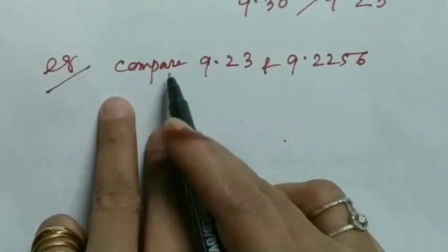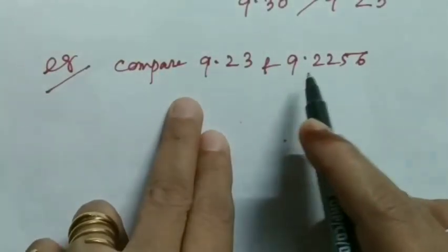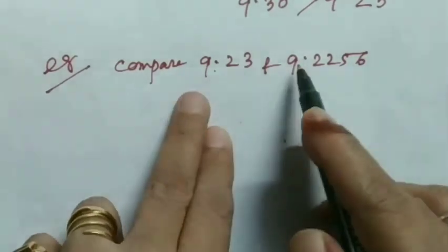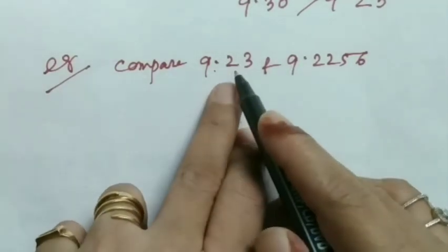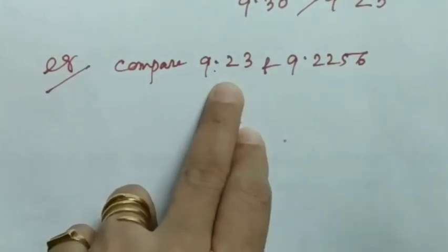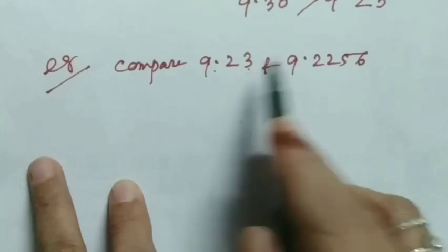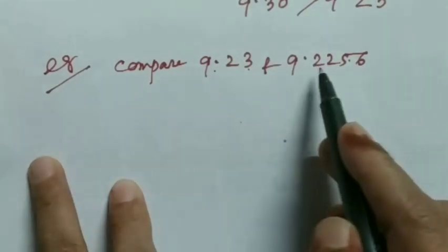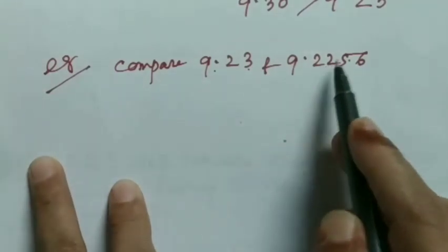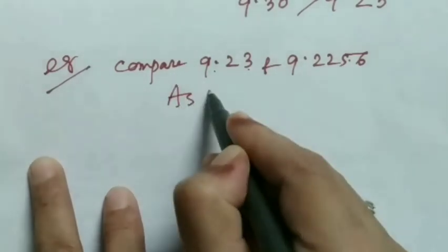Let's take another example: compare 9.23 and 9.2256. Here whole number parts are equal, tenths places are equal, so we are going to compare hundreds place. Here it is 3, here 2. As 3 is greater than 2, therefore 9.23 is greater than 9.2256.